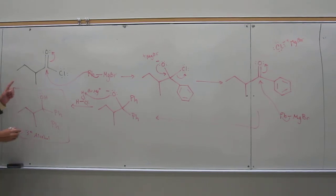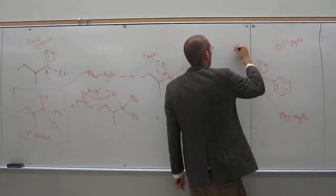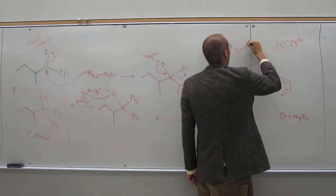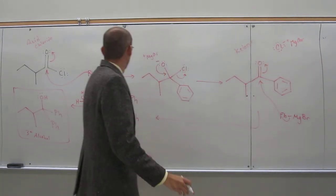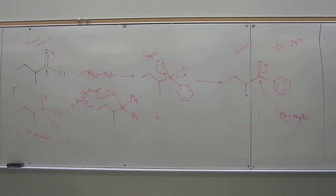So it went from an acid chloride to a ketone as an intermediate, and then to the tertiary alcohol. Everybody cool with that one? It's the same mechanism over and over. Any questions?